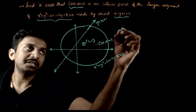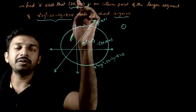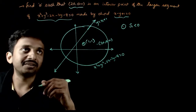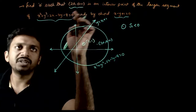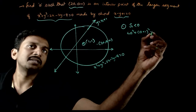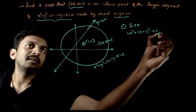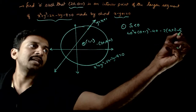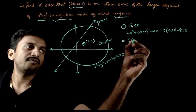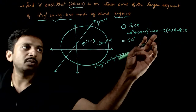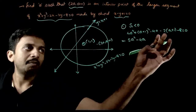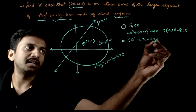The first condition is that this point must lie within the circle. If a point lies inside the circle, then S₁ must be less than 0. Substituting the point into the circle equation: 4a² + (a+1)² − 2(2a) − 2(a+1) − 8 equals 0. This gives 4a² + a² + 2a + 1 − 4a − 2a − 8, which simplifies. Collecting terms: 5a² − 4a − 9.